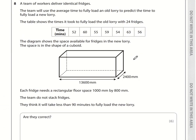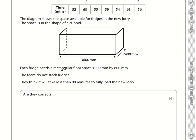Question 8. The team will use the average time to fully load an old lorry. What is the average time? We have these times: 52, 60, 55, 59, 54, 63, 56. That's 7 times. We add them up: that comes to 399 minutes. 399 divided by 7 is 57 minutes. So it's going to take 57 minutes for 24 fridges.